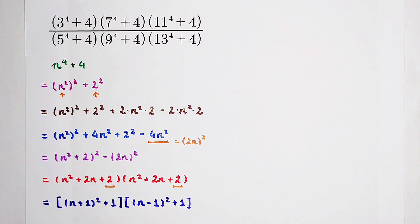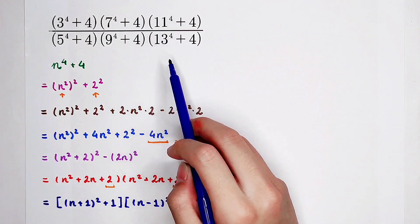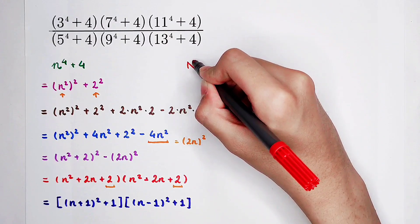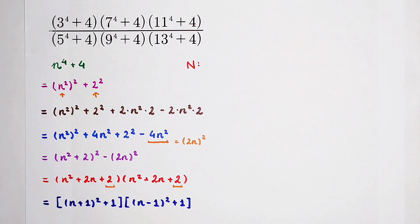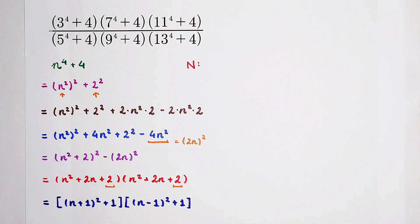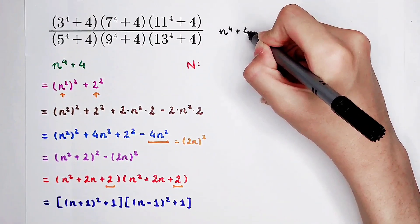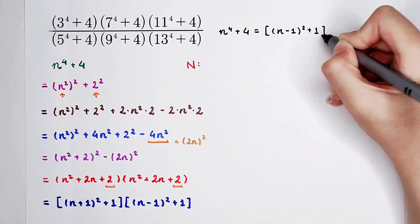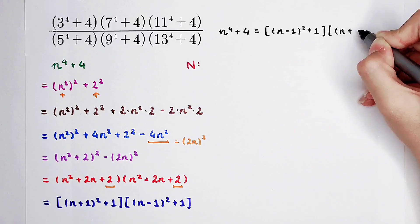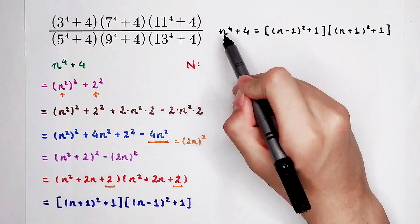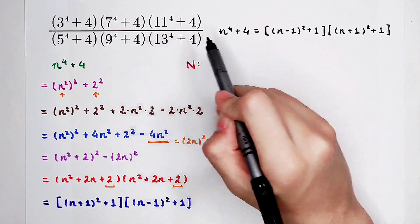It looks more complicated, however it will help us solve this question. Now the numerator and the denominator will change a lot. For the numerator, n to the power 4 plus 4 equals n minus 1 all squared plus 1, times n plus 1 all squared plus 1. For the numerator, n is equal to 3, 7, and 11. For the denominator, n is equal to 5, 9, and 13. Let's deal with the numerator first.